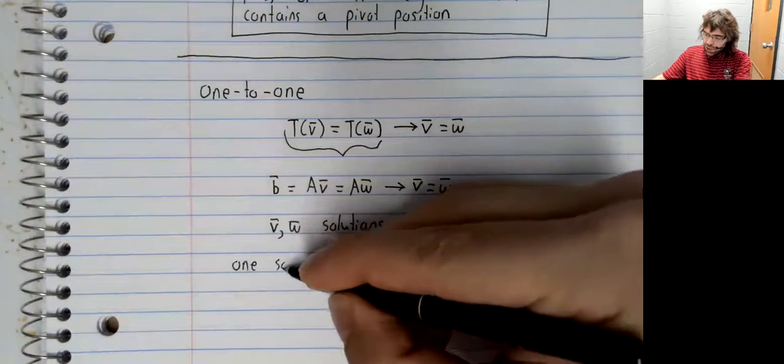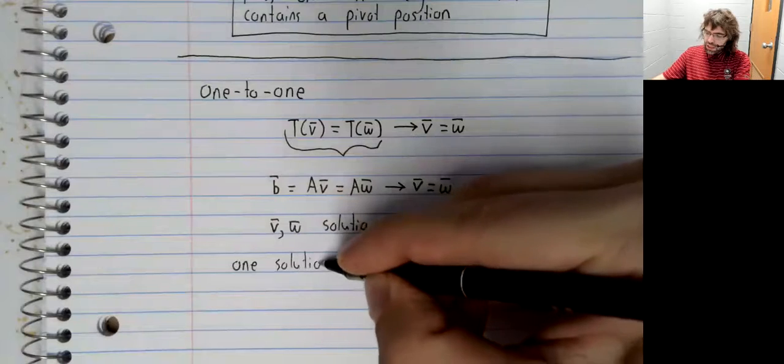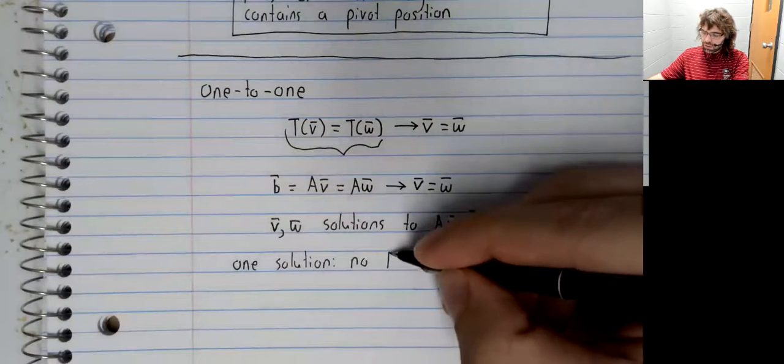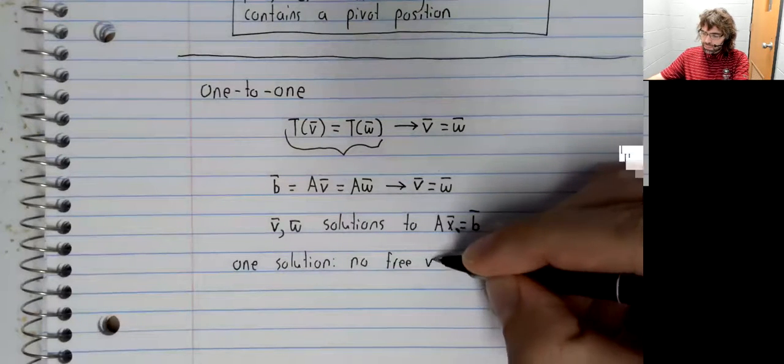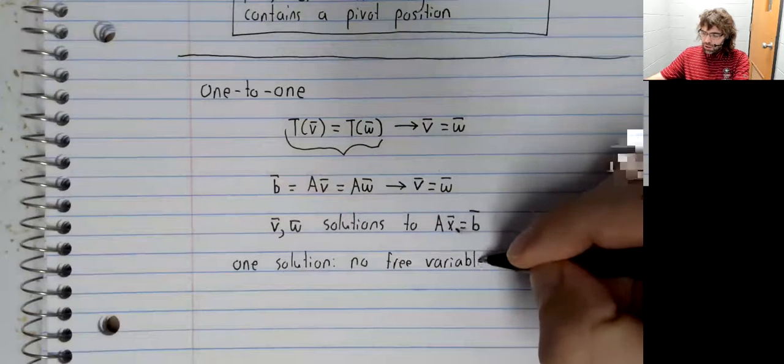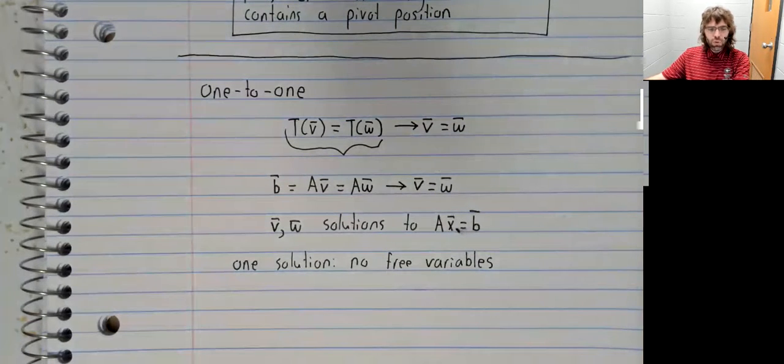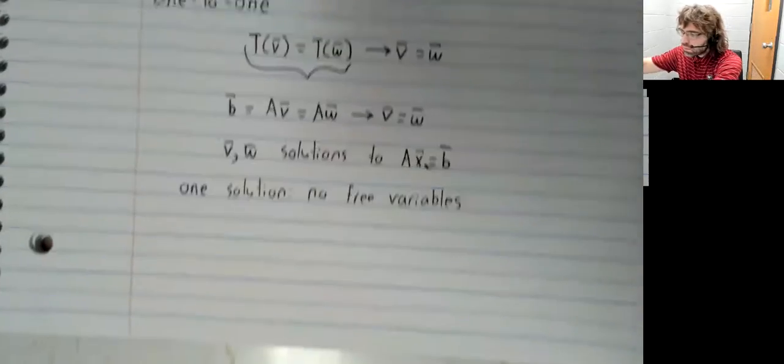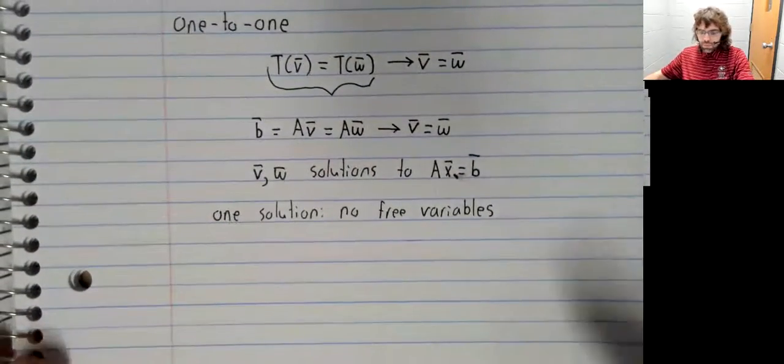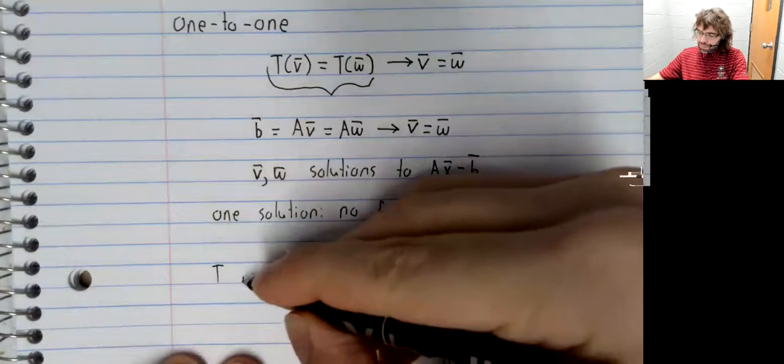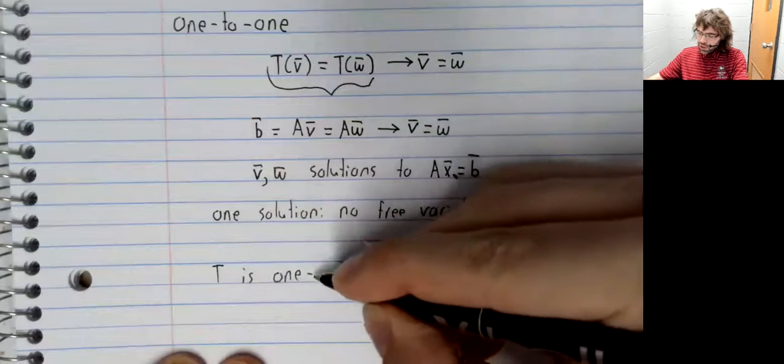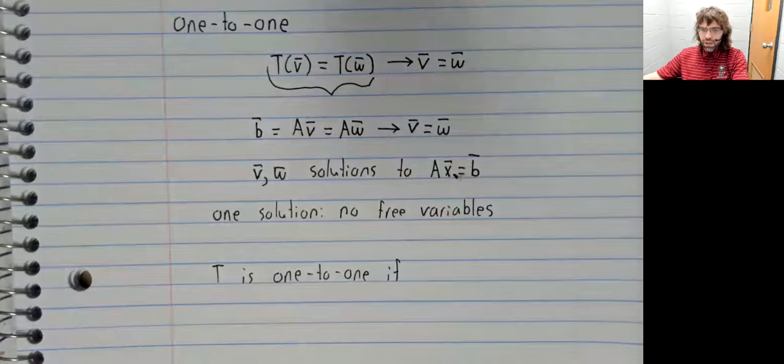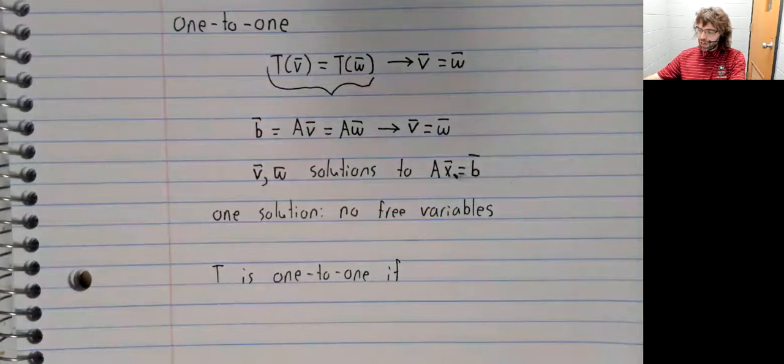Let's remind ourselves what we need to have exactly one solution. We need to have no free variables. So T is one to one if there are no free variables.